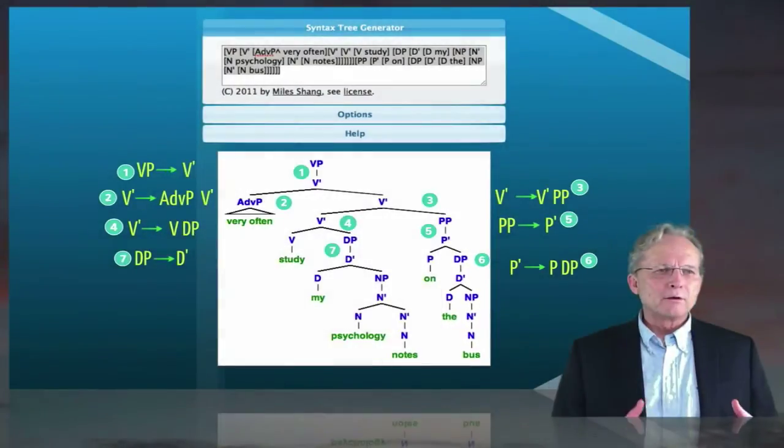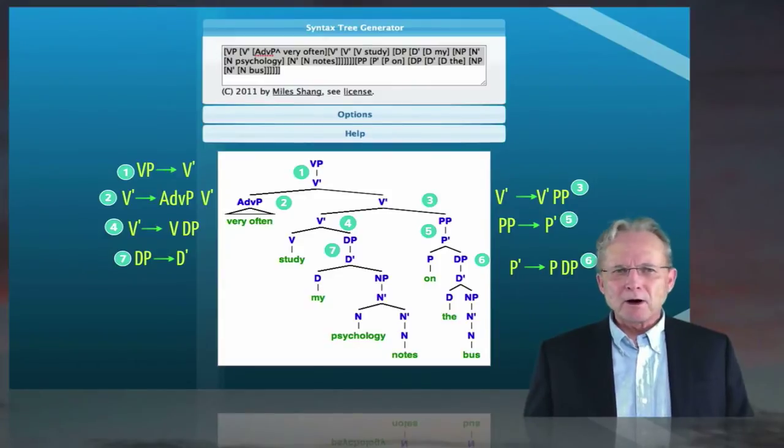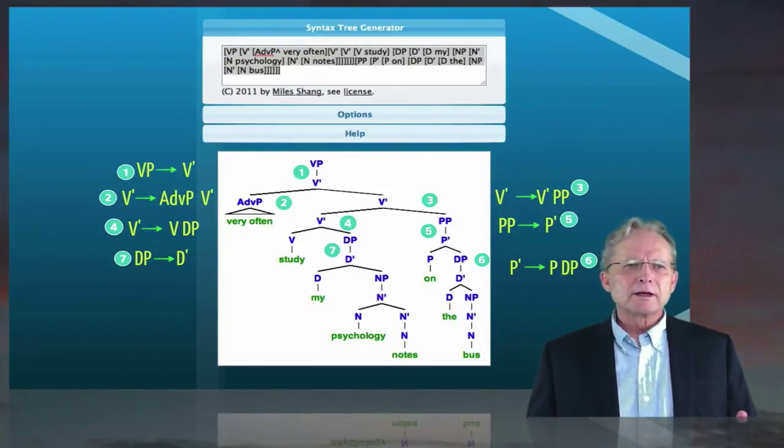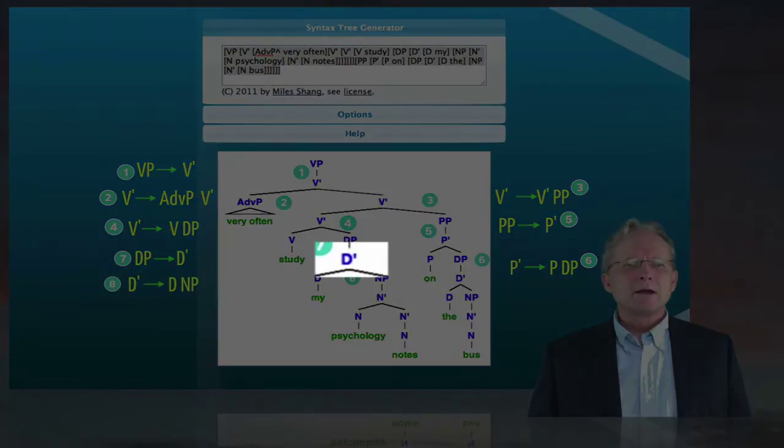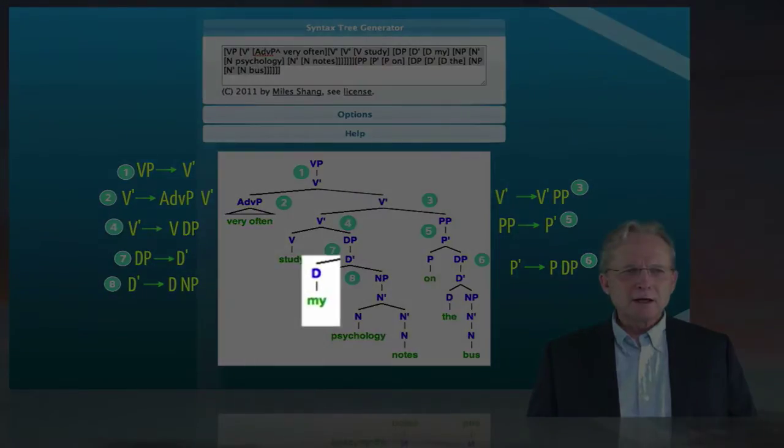And then the complement of study, that DP can be elaborated in the same way, where the DP minimally contains a D bar. And that D bar minimally contains a D and possibly a complement to its right, which is an NP.